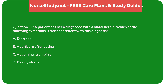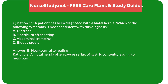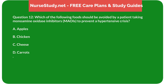Question 11: A patient has been diagnosed with a hiatal hernia. Which of the following symptoms is most consistent with this diagnosis? A) Diarrhea, B) Heartburn after eating, C) Abdominal cramping, D) Bloody stools. Answer: B, Heartburn after eating. Rationale: A hiatal hernia often causes reflux of gastric contents, leading to heartburn.